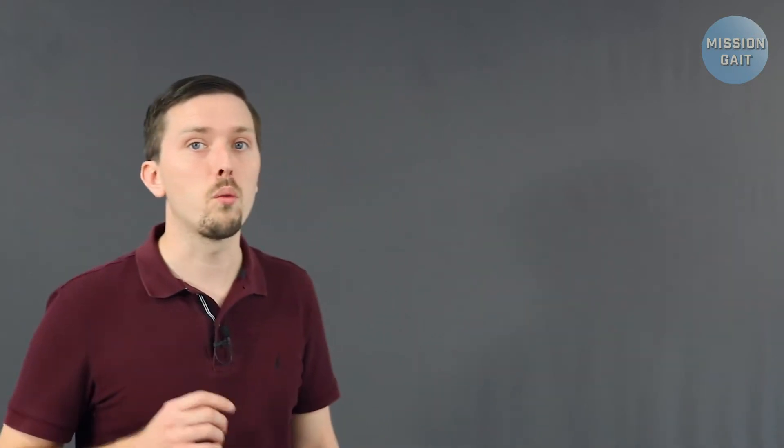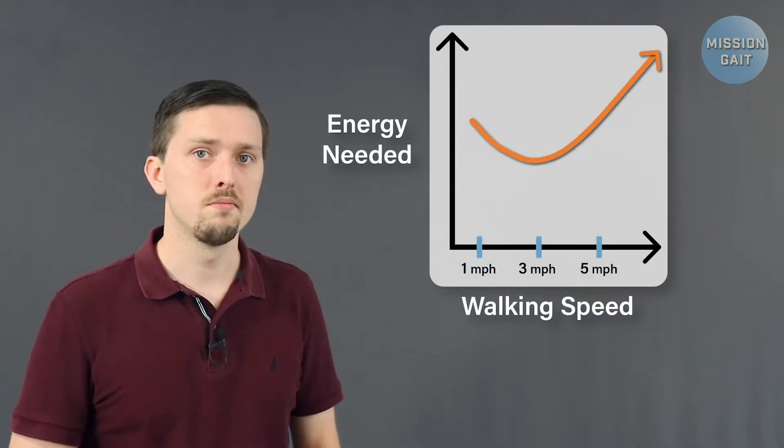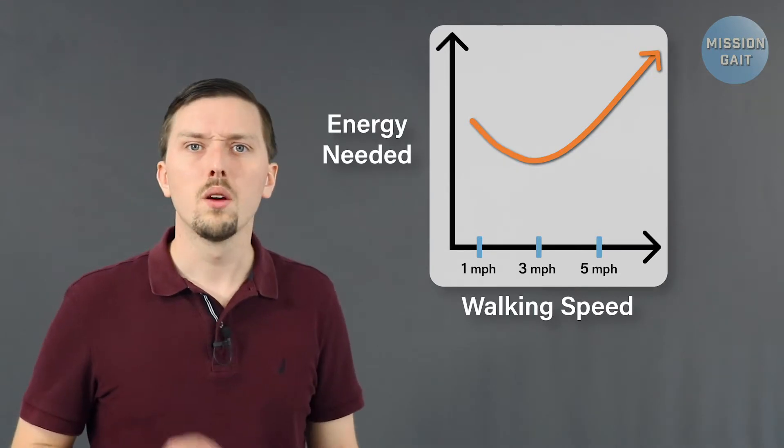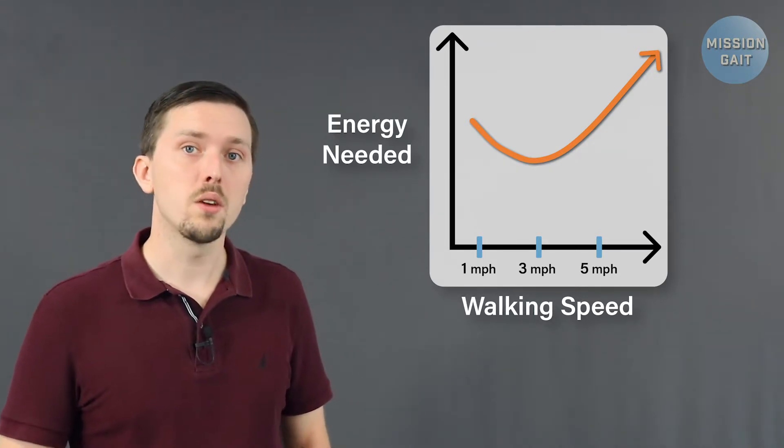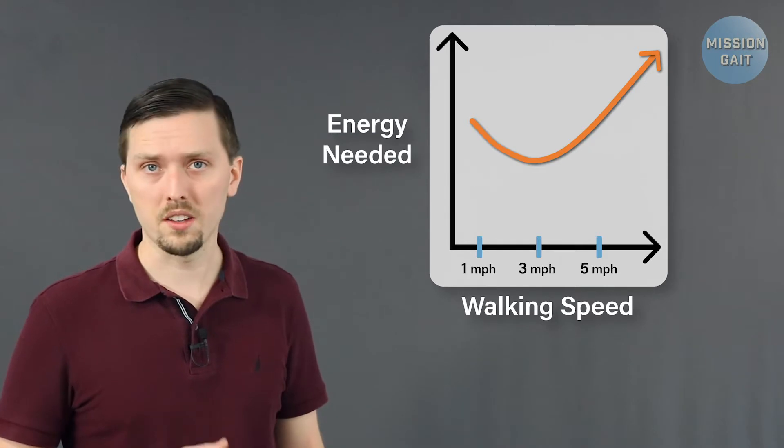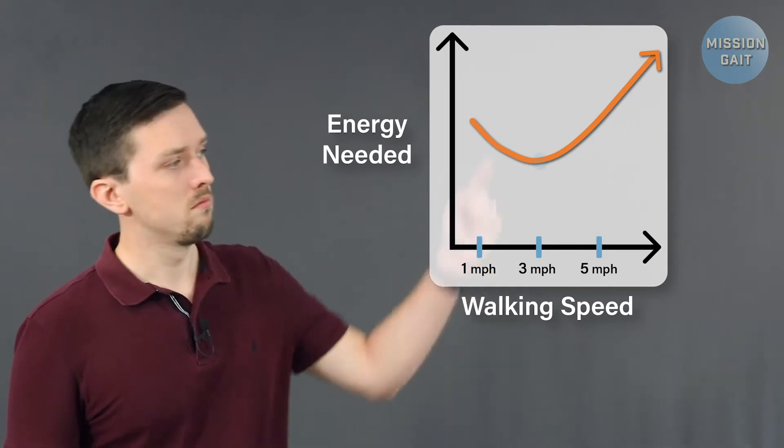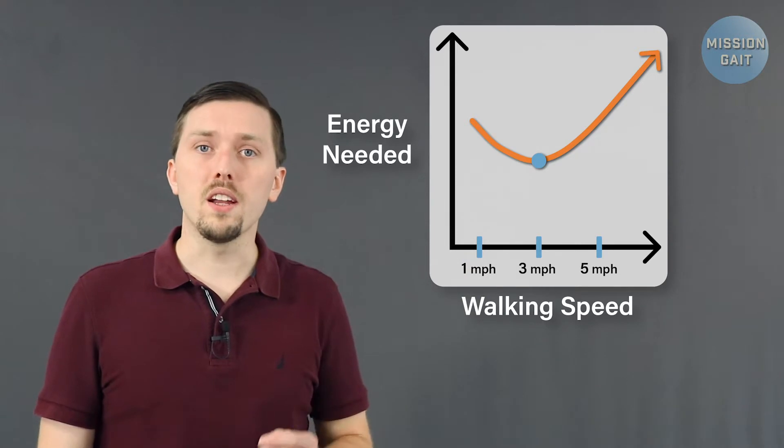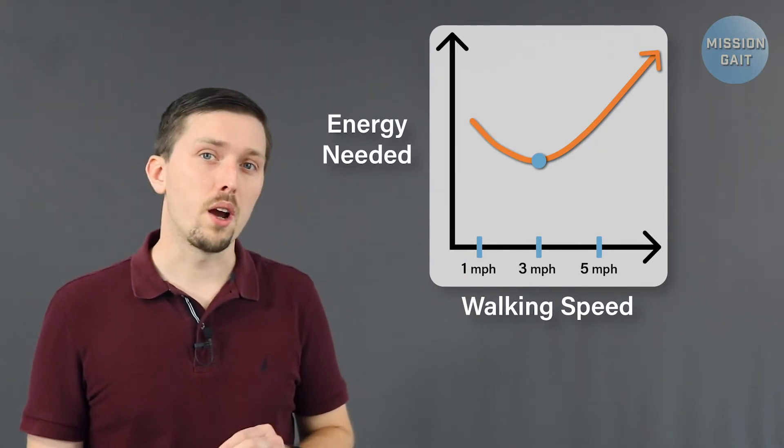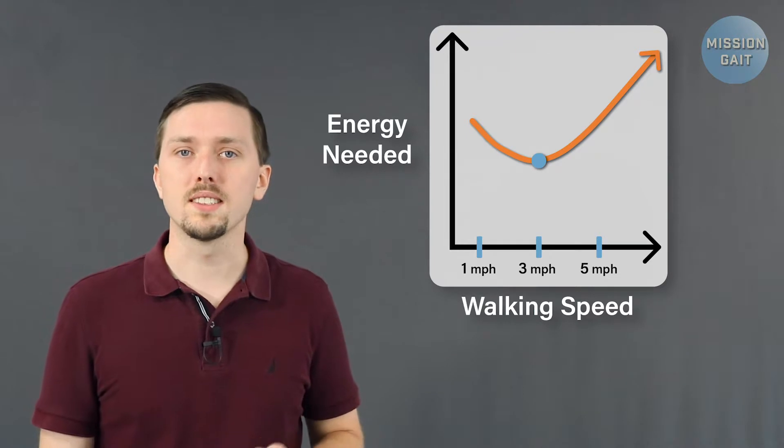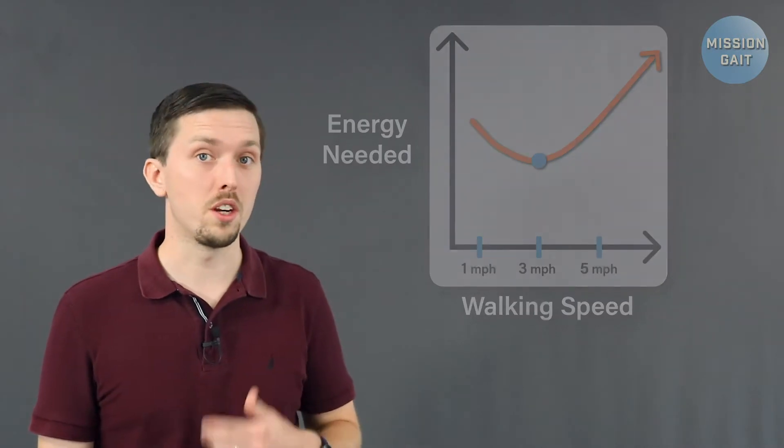Automobiles are typically designed to be most efficient at highway speeds, around 55 miles per hour, and we too have an internally set most efficient speed. To see this, all we need to do is look at a graph comparing walking and the energy needed to cover a certain distance. When we find the walking speed with the least energy needed, we find our most efficient walking speed. On this graph, it's about here. And this speed has been found to be about 3 miles per hour for most people. It's no coincidence that this is exactly in the ballpark of usual human speeds.